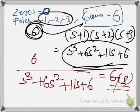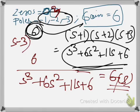You may now ask: what if the zero was given as something other than zero — say 2 or 3? In that case the numerator would be s minus 3 multiplied by the gain of 6, so it becomes 6(s−3).